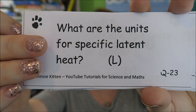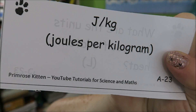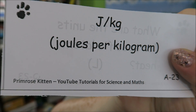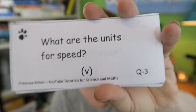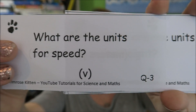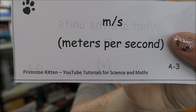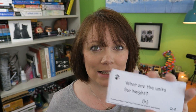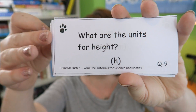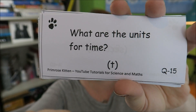What are the units for specific latent heat? Specific latent heat is measured in joules per kilogram. What are the units for speed? Speed is measured in meters per second, m per s. Not miles per second — that is meters per second. What are the units for height? Height is measured in meters.